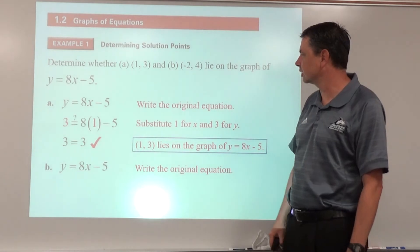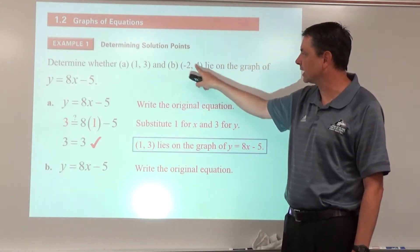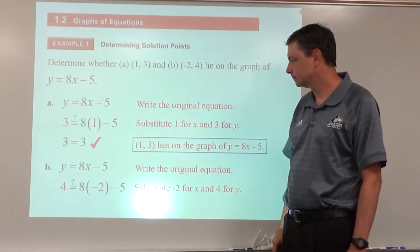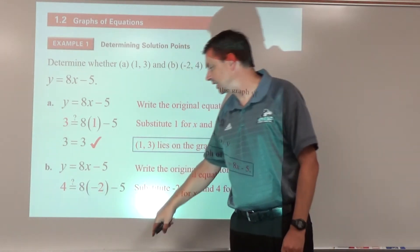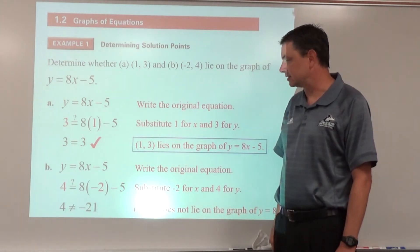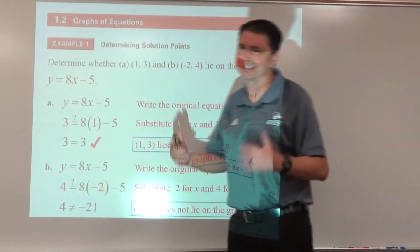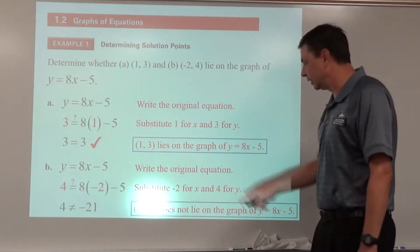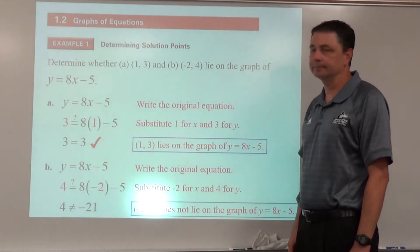For part b, write the original equation, substitute for x and y. Since 8 times -2 minus 5 does not equal 4 — in fact it's -21 — we put a slash through the equals sign. That means the point is not a solution to that equation.